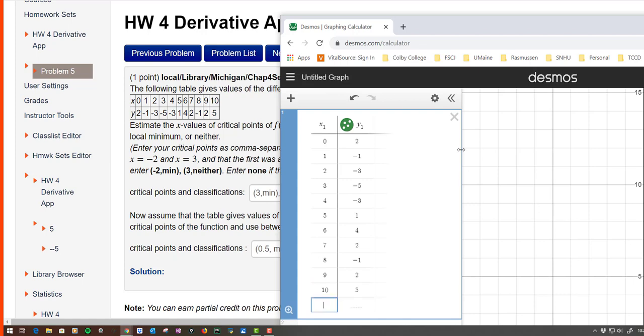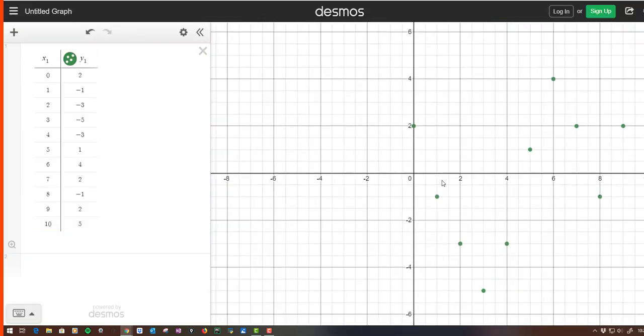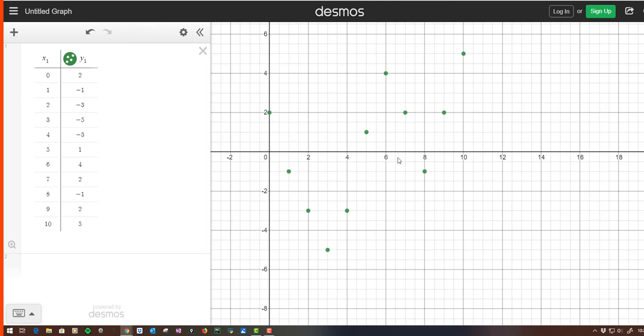And what that does is it plots the points and I can kind of see what's going on here, right? So I can see definitely that is the minimum value, but remember it's a critical point so it needs to be where it's going from decreasing to increasing. You might say that's the max, but this is actually at a critical point.